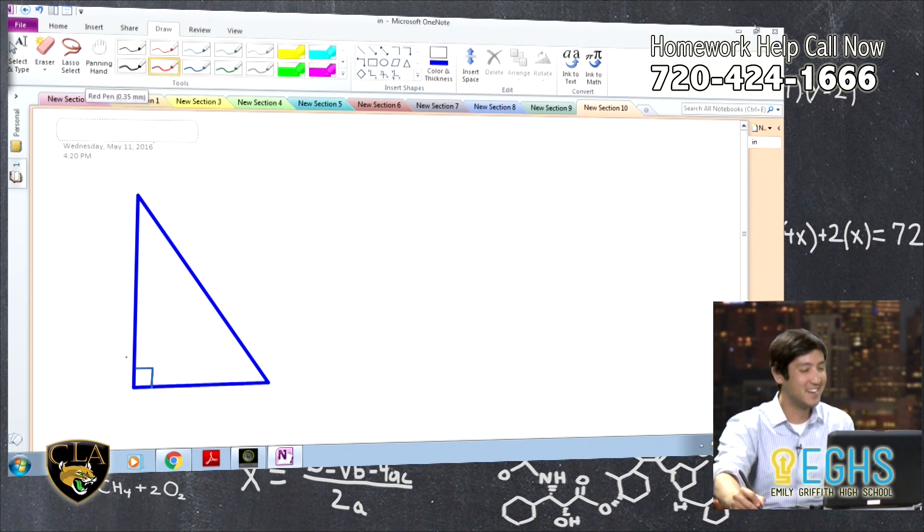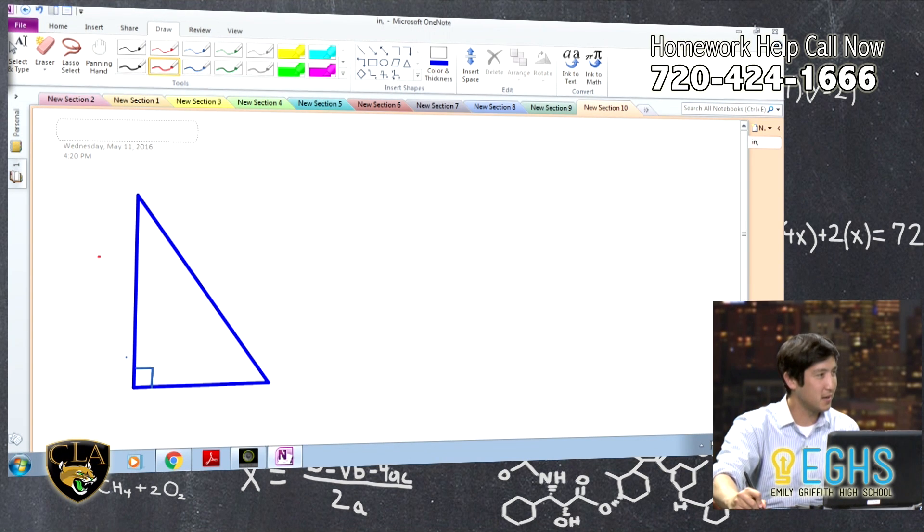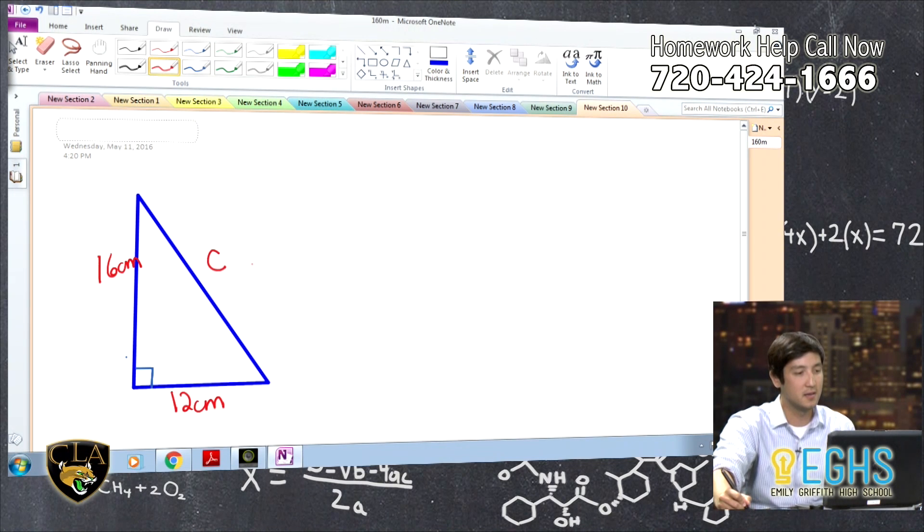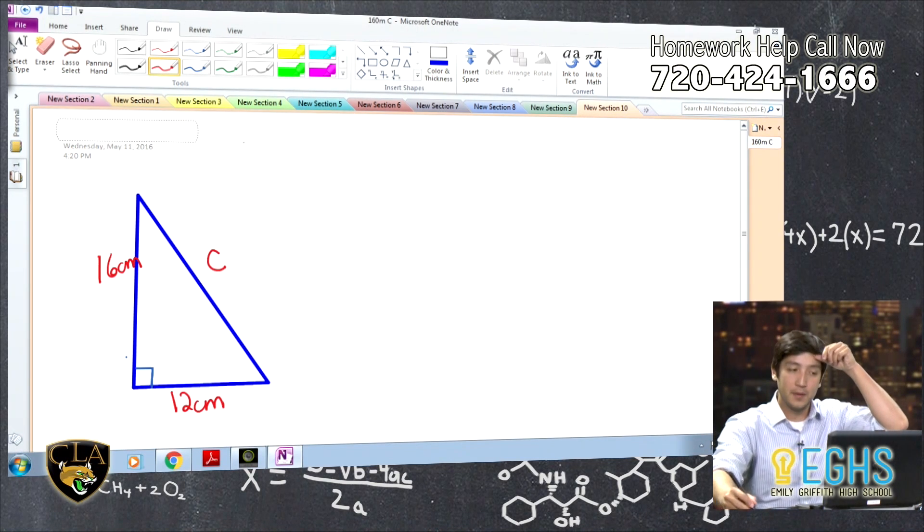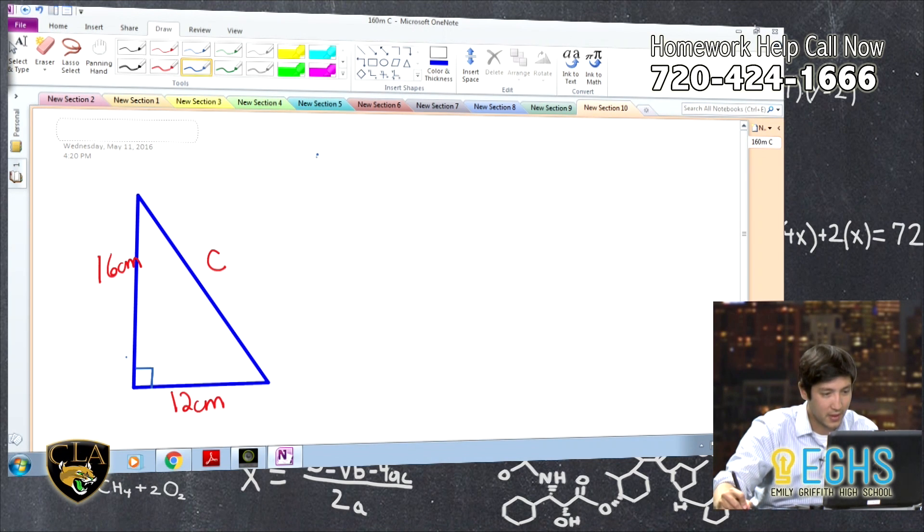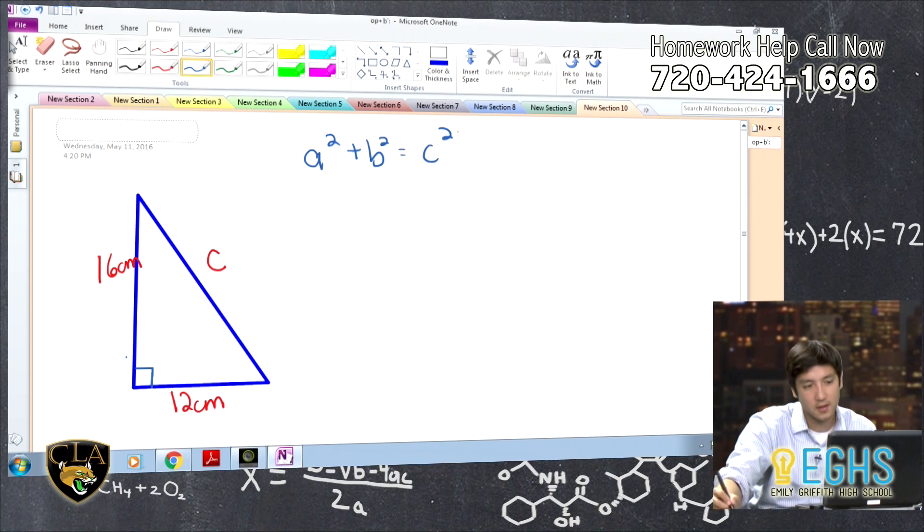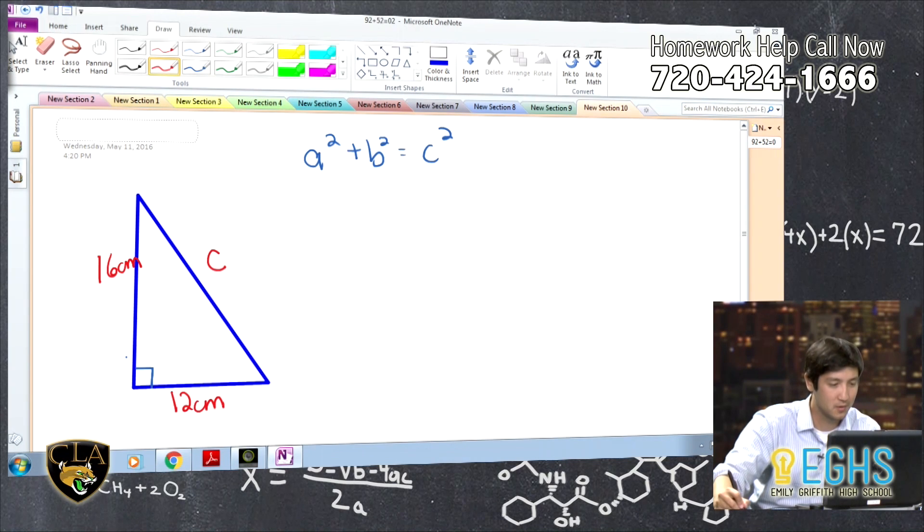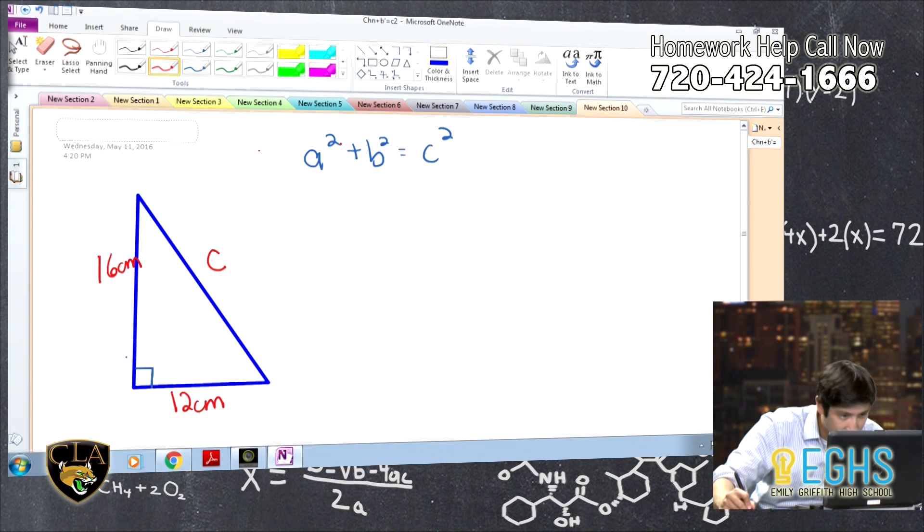All right. So we got this right triangle. We got one leg is 16 centimeters, and the other leg is 12 centimeters, and we are looking for the hypotenuse, and in this case, we're calling it C. So typically what you always hear is Pythagorean theorem is A squared plus B squared equals C squared. I kind of sometimes like to think about this as leg squared plus leg squared equals hypotenuse squared because it kind of helps you think about this a little bit differently.